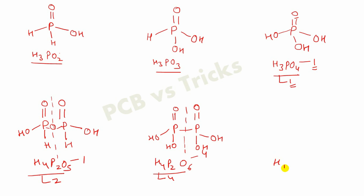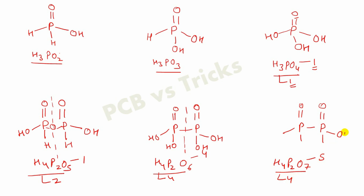Now we will see H4P2O7. First, show a single bond between two phosphorus atoms and follow the same steps. You can see you have five oxygen and four hydrogen left. You can make four OH groups and fill them in, but now there is one oxygen left. Fill the remaining oxygen between the two phosphorus atoms, just as in H4P2O5. In this way, the structure of H4P2O7 is complete.